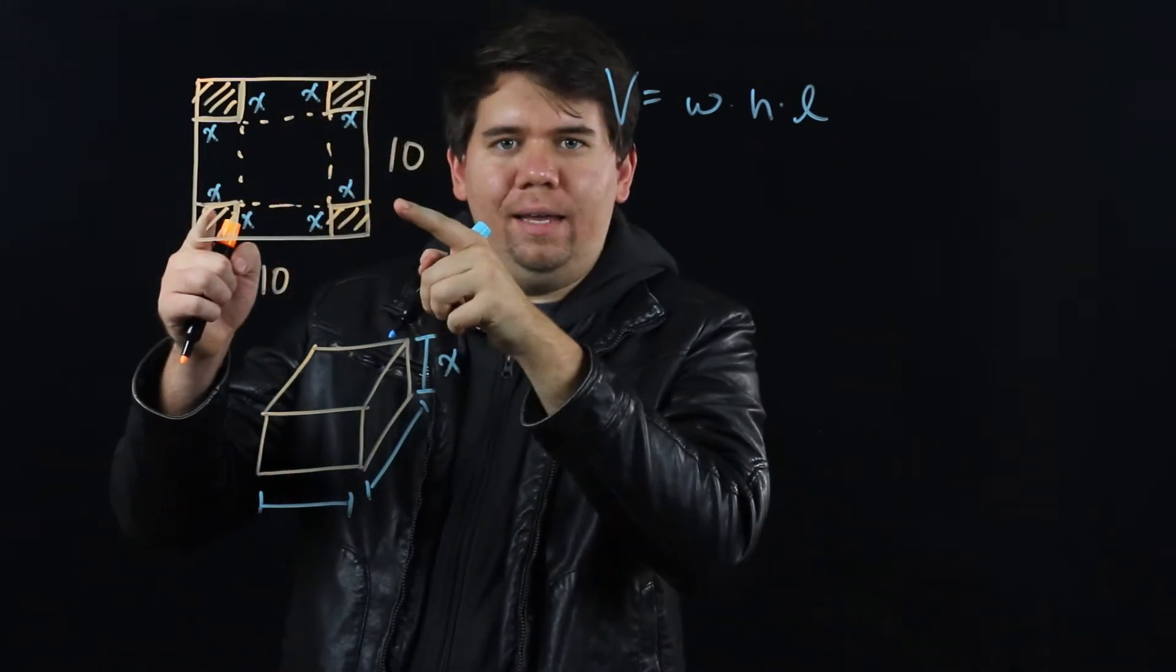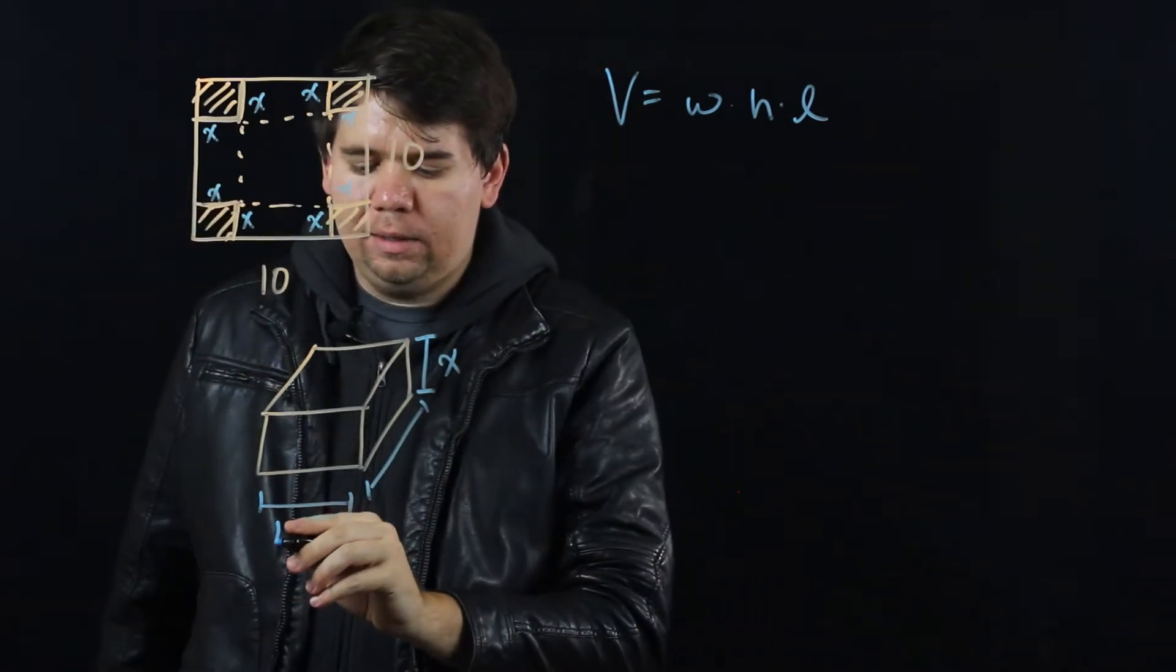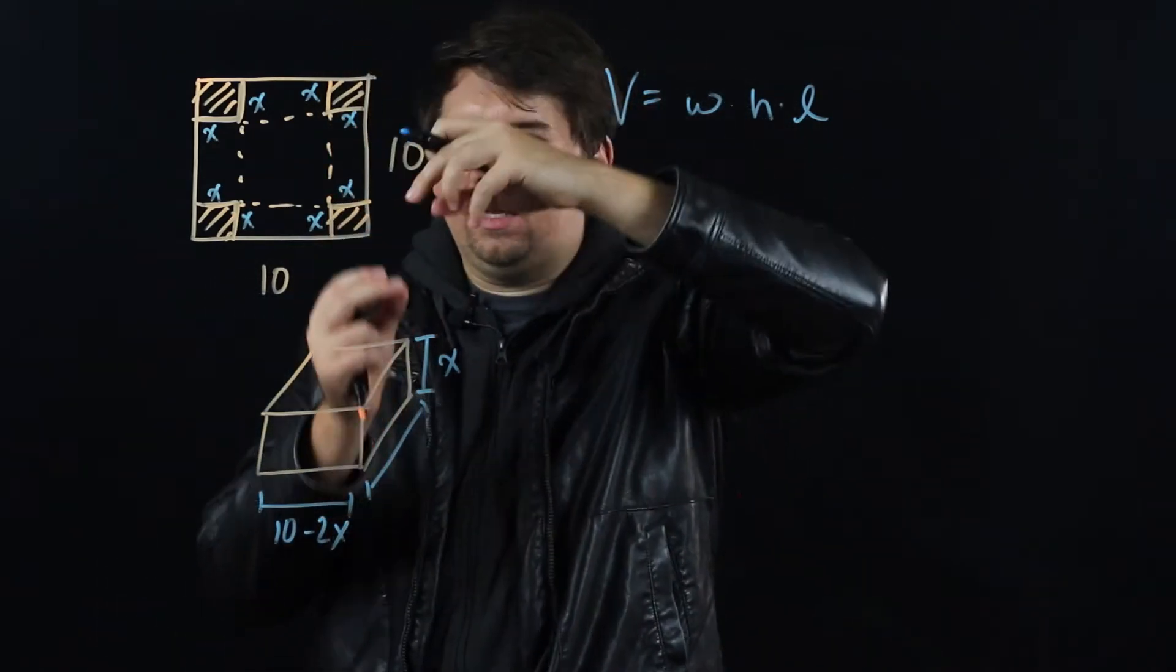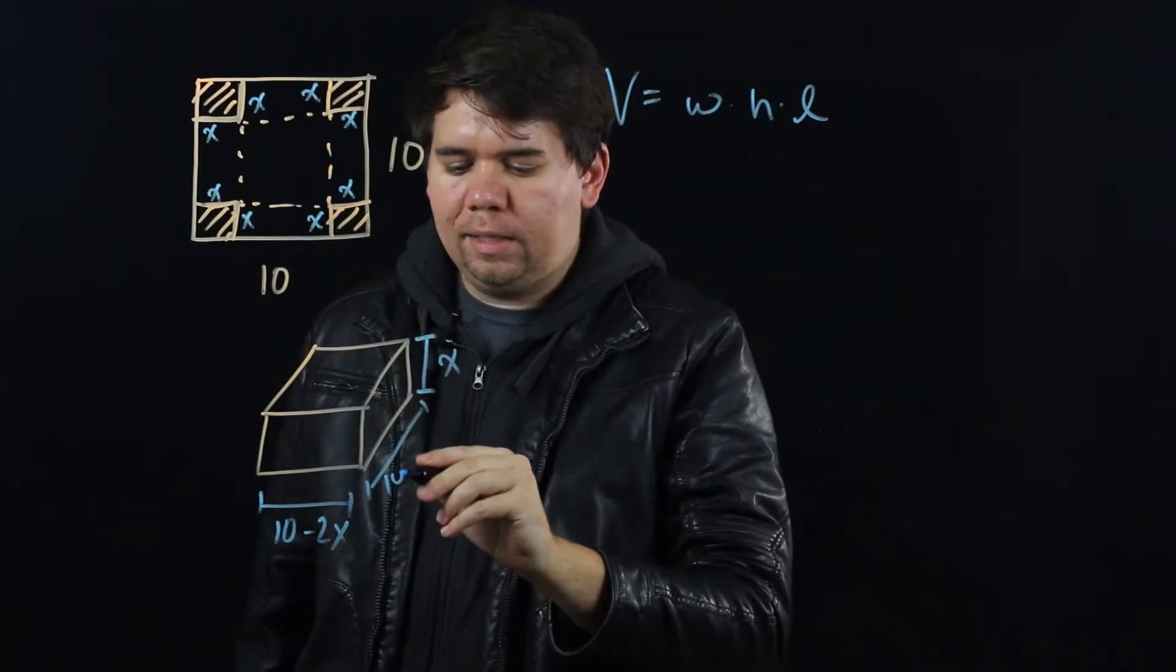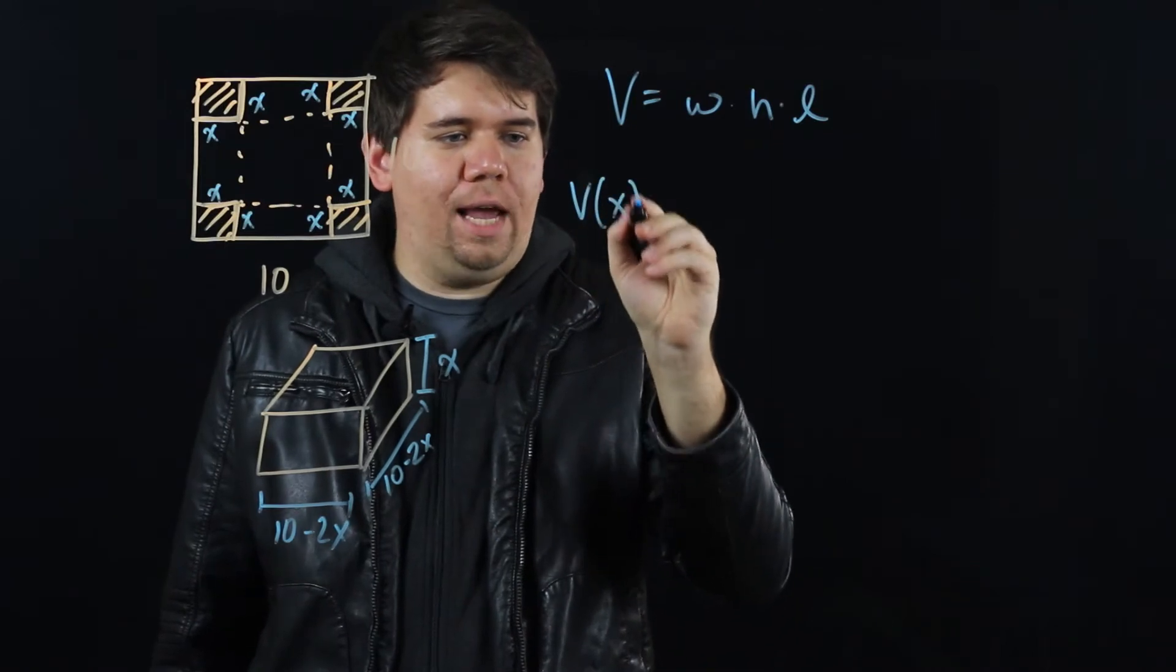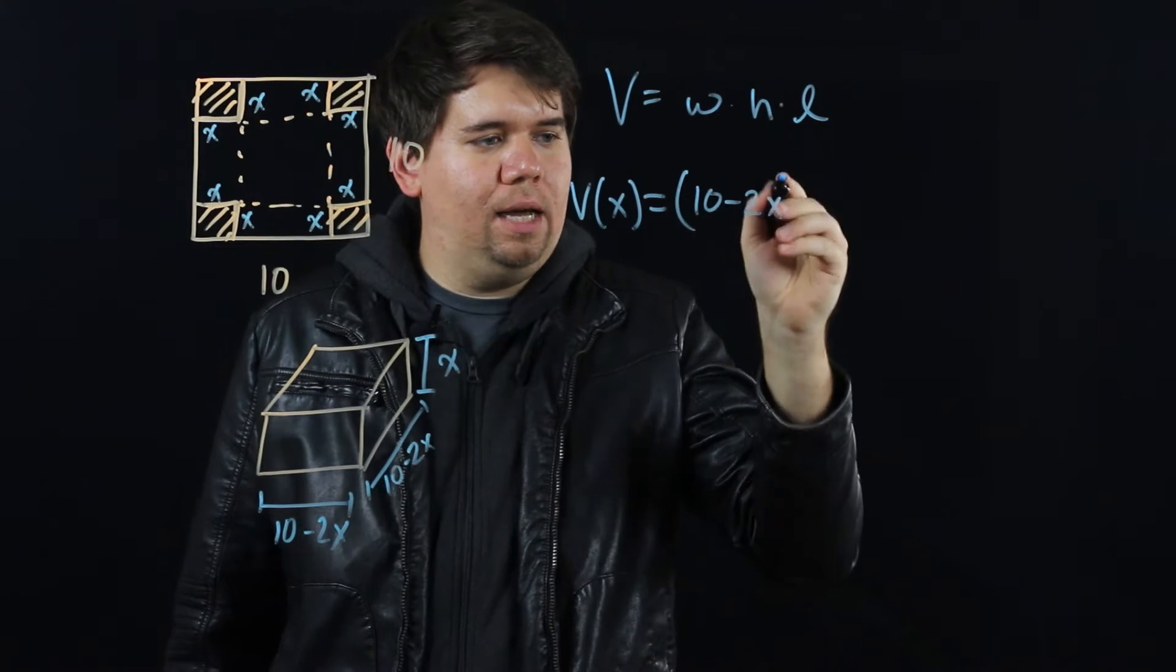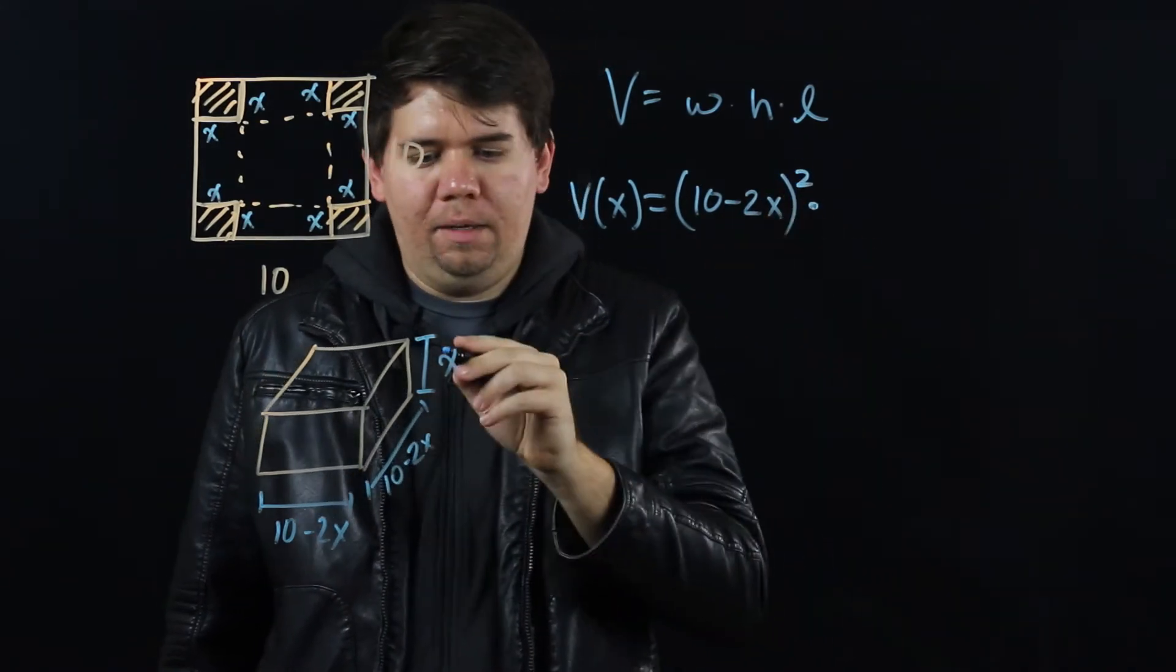Originally it was 10, but then we removed x from each side. So our width became 10 minus 2x. Same thing for the length. It was 10, but we removed x from each direction, making it 10 minus 2x. Hence we get volume as a function of just x will be 10 minus 2x times 10 minus 2x, so (10 minus 2x) squared times x.